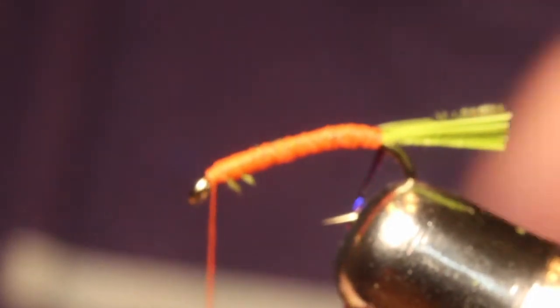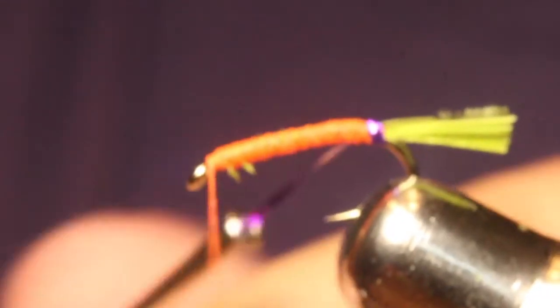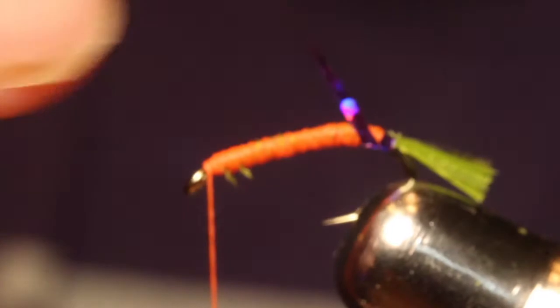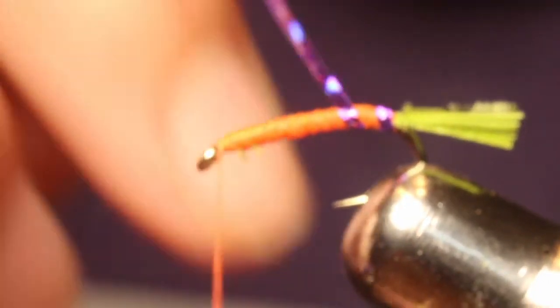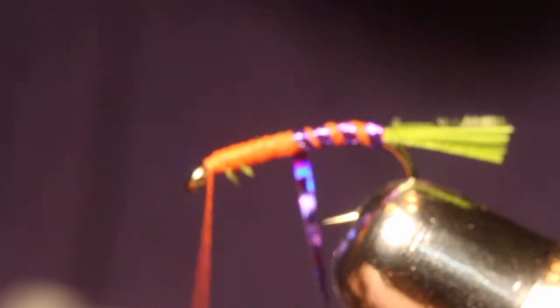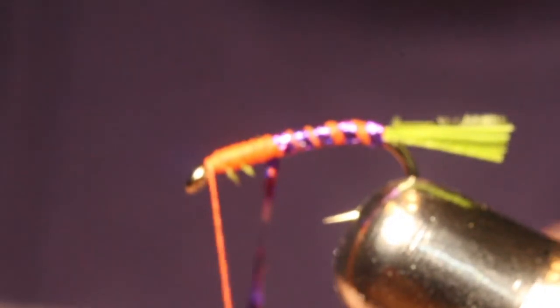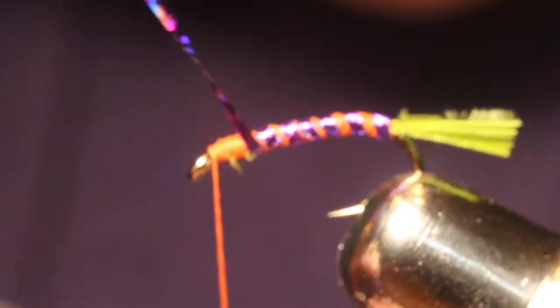And you're going to move your thread all the way forward, and then you're going to take your purple flashaboo and you're going to make sure that it doesn't clamp your tail down. And you're going to just wrap it, still leaving some of the orange to where you can see it.